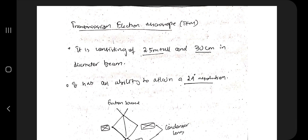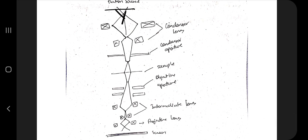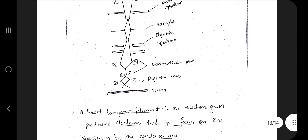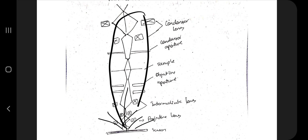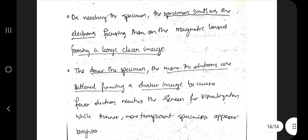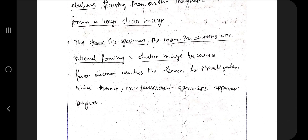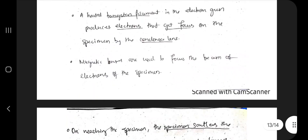The final technique is the Transmission Electron Microscope — a tube 2.5 meters tall and 30 centimeters in diameter, capable of resolving up to 2 angstroms. Electrons are emitted from the electron source, the condenser lens thins the beam, the sample and objective aperture focus on the same point, and a screen records transmission. The key point is: the denser the specimen, the more electrons are scattered and the darker the image; the thinner and more transparent the specimen, the brighter the image.